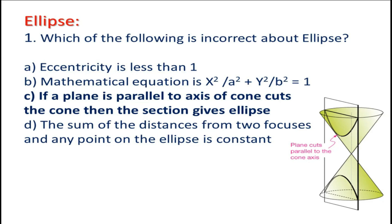Friends, you can see in the figure — a cone is given. If we cut it with a plane parallel to its axis, the shape we get is parabolic. So the answer will be C. If a plane is parallel to the axis of a cone and cuts the cone, the section gives not an ellipse — it is a parabola.